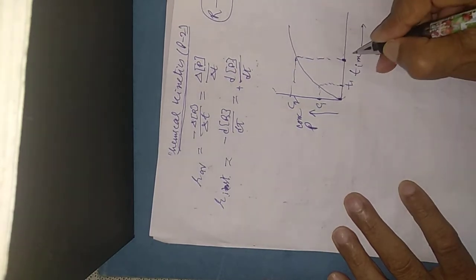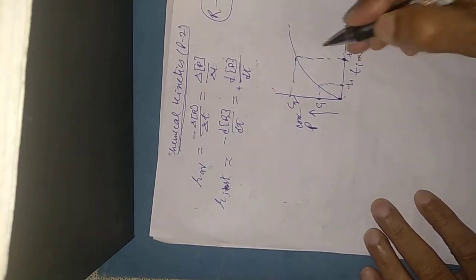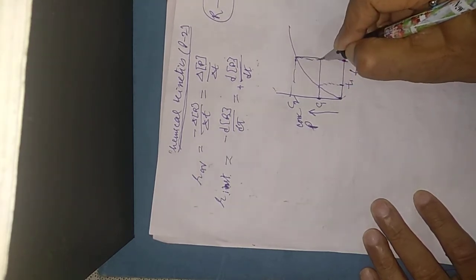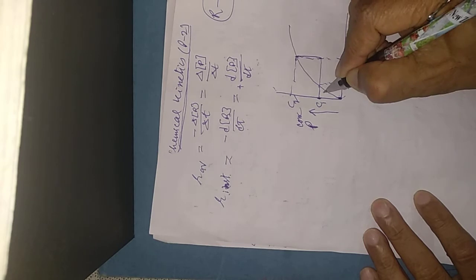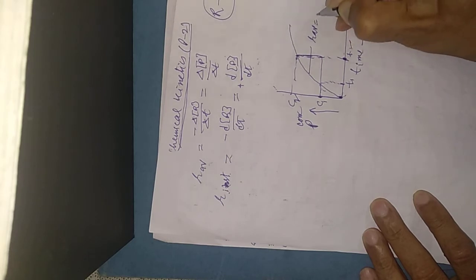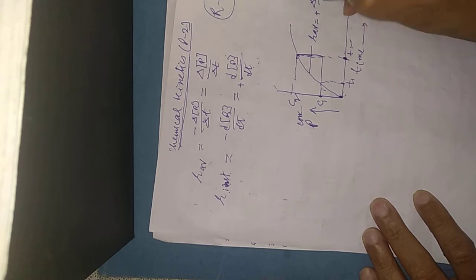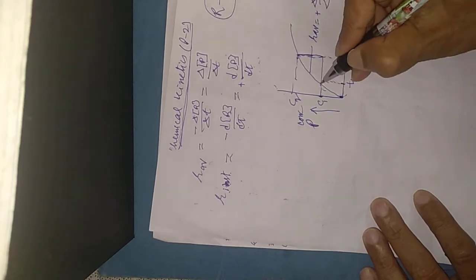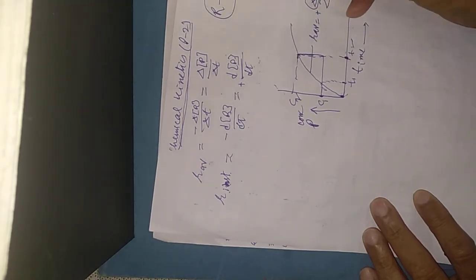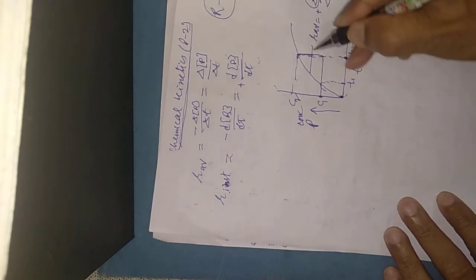Now what is R average? This is T1 and T2. This is the difference, delta T. If you join this, it will be like this. This is the R average, that is delta P upon delta T. The average rate shows how much concentration will change and how much time will change. This is how we can calculate it by graph.